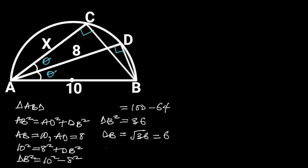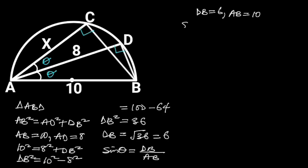Also, in triangle ABD, from the trigonometric ratio, sin theta is equal to DB over AB. DB is equal to 6 and AB is equal to 10. It follows that sin theta is equal to 6 over 10, which is equal to 3 over 5.